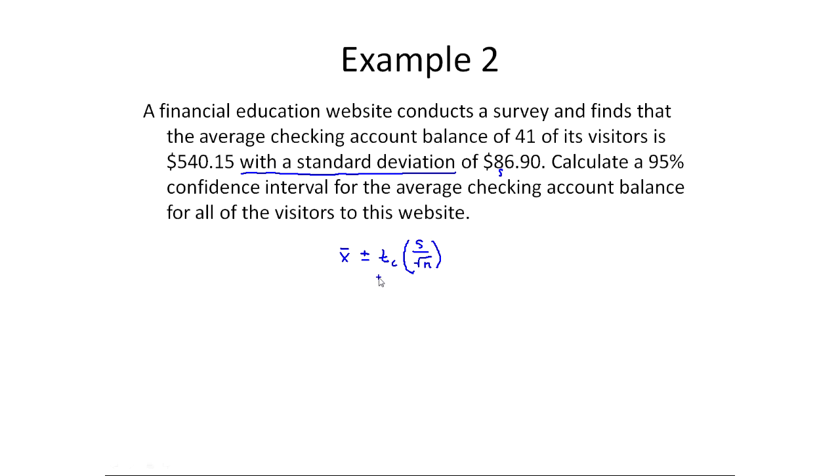Now tc in this particular case, what we'll do is we'll look on the t-table for degrees of freedom. Degrees of freedom are in that first column, and it's based off your sample size. For the t-distribution, when you're estimating a single mean, it's going to be n minus 1. In this case, that's 41 minus 1, which is 40.